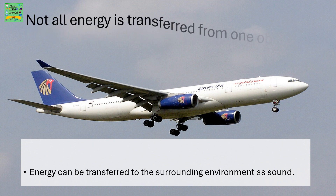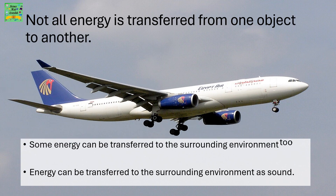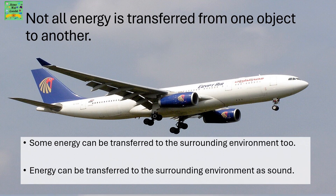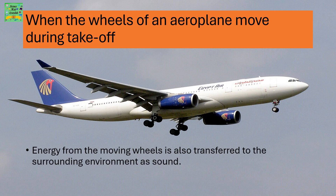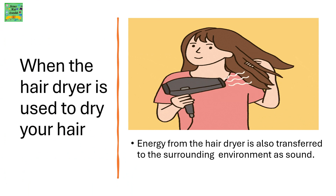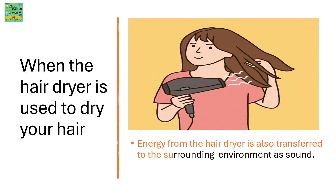Not all energy is transferred from one object to another. Some energy can be transferred to the surrounding environment too. Energy can be transferred to the surrounding environment as sound. For example, when the wheels of an aeroplane move during take-off, energy from the wheels is also transferred to the surrounding environment as sound. Similarly, when a hairdryer is used to dry your hair, energy from the hairdryer is also transferred to the surrounding environment as sound.